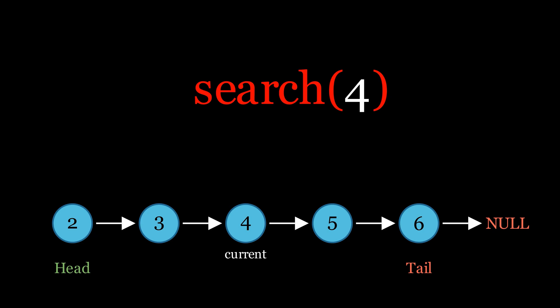Both the traversal and search operations have linear time complexity because they both involve iterating through the list in a loop.